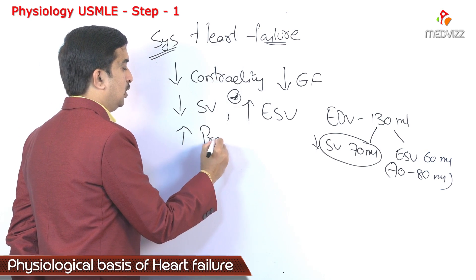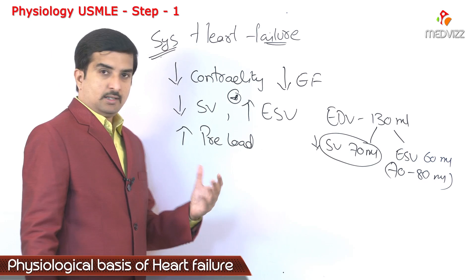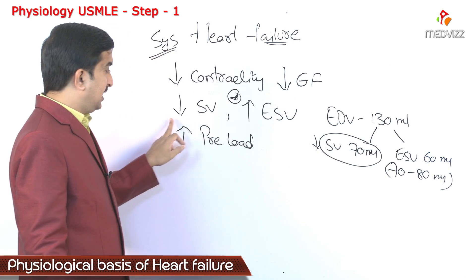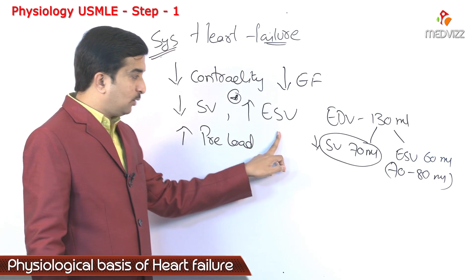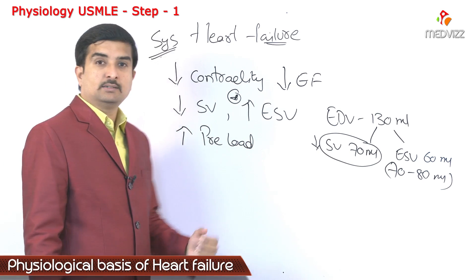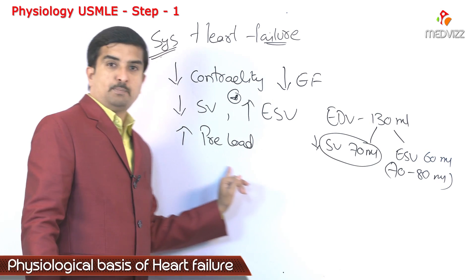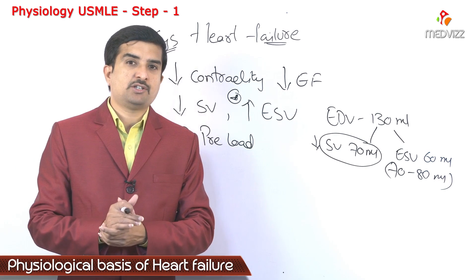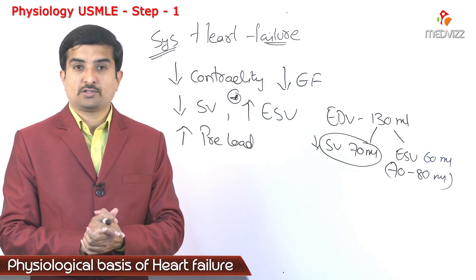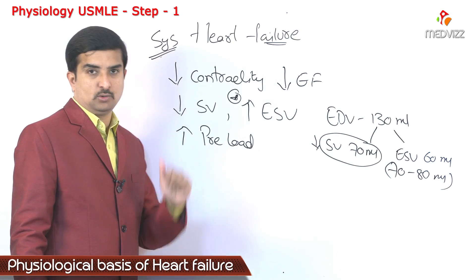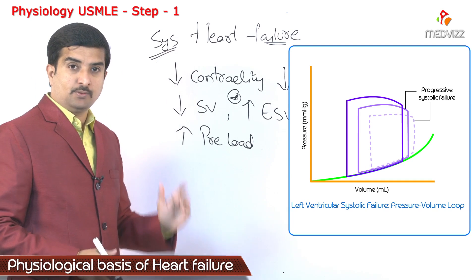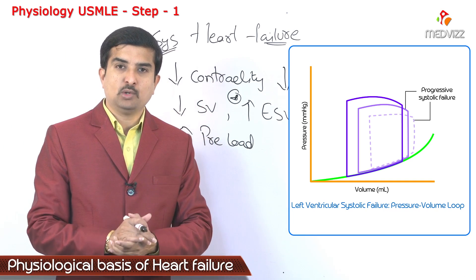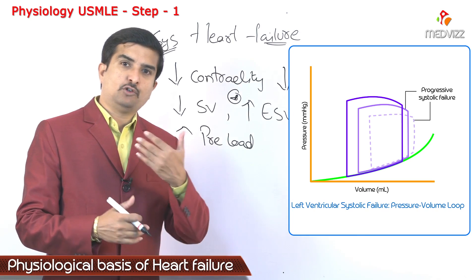Because of the problem in contractility, there is an increase in end systolic volume in systolic heart failure. There would also be an increase in preload. In systolic heart failure: decreased contractility, decreased ejection fraction, decreased stroke volume, increased end systolic volume, and increased preload. The increased preload is an inherent adaptation to partially compensate for the loss of contractility. In such cases, the pressure-volume loop shifts to the right.